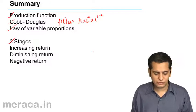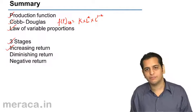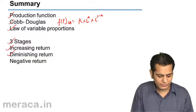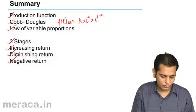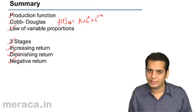So in short, we've done three stages. The first stage is the stage of increasing return. Second stage is the stage of decreasing return and third stage is the stage of negative returns.